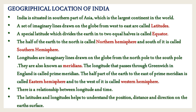Children, the next concept is the geographical location of India. India is situated in the southern part of Asia, which is the largest continent in the world. A set of imaginary lines drawn on the globe from west to east are called latitudes. Once you refer to the textbook page number 228. A special latitude which divides the earth into two equal halves is called the equator.